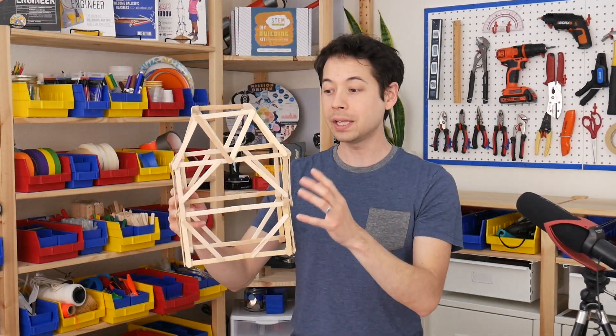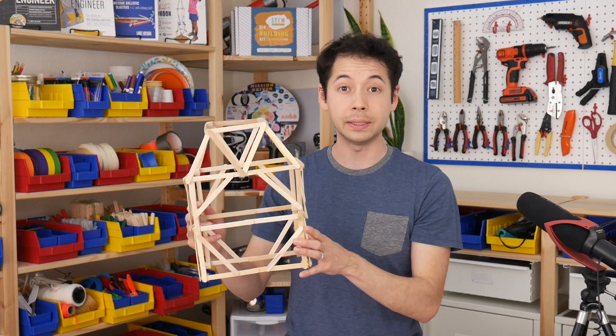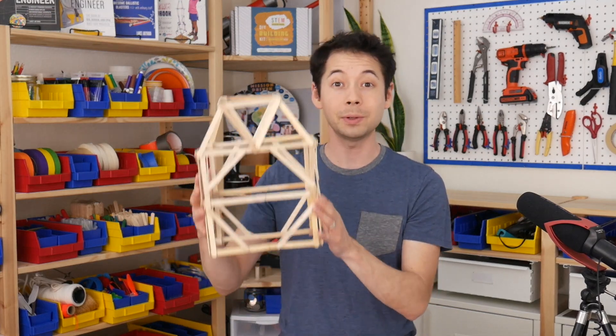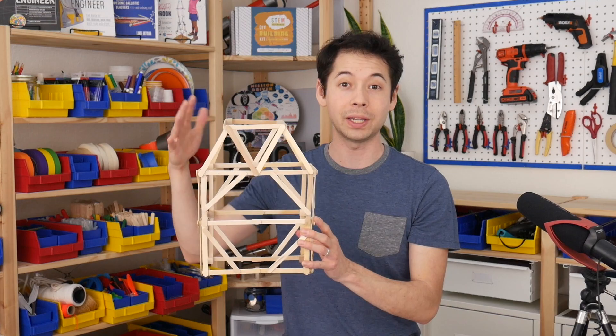So a tower that's comprised of just square shapes could probably hold quite a bit of weight, but if you incorporate triangles, I wouldn't be surprised if your design could withstand 50 pounds of weight or more.